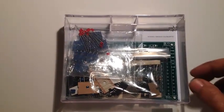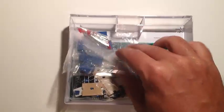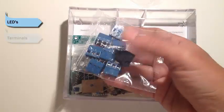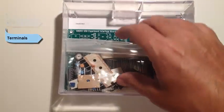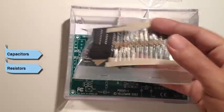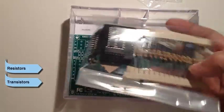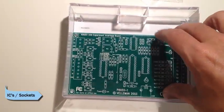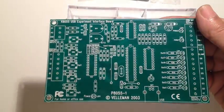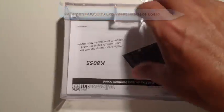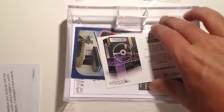Alright, so let's take an inventory of the parts. We have some LEDs, some terminals, capacitors, resistors, transistors, and integrated circuits and sockets. We have the PC board where everything gets soldered into to build the circuit. Instructions and warranty card.